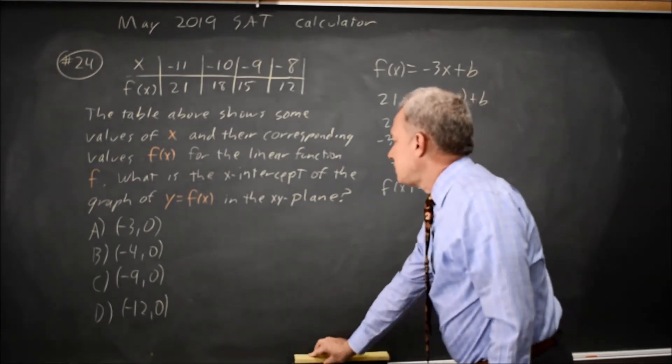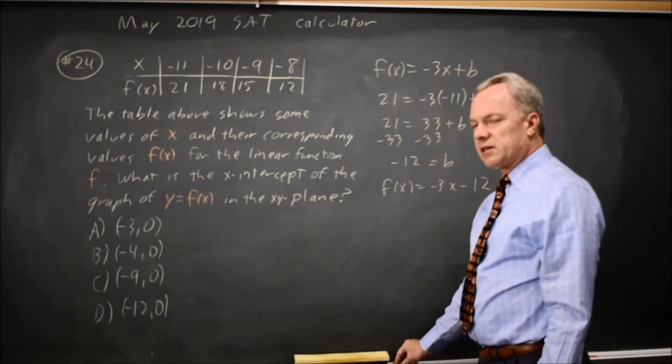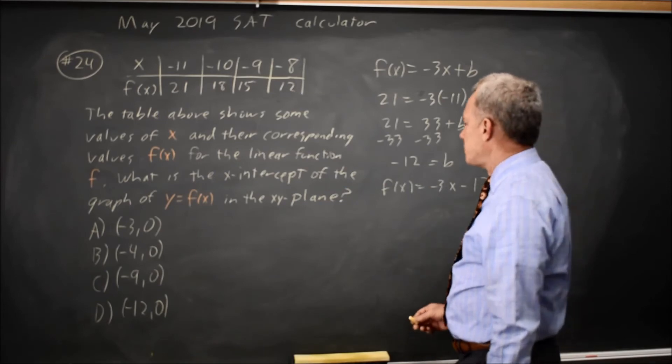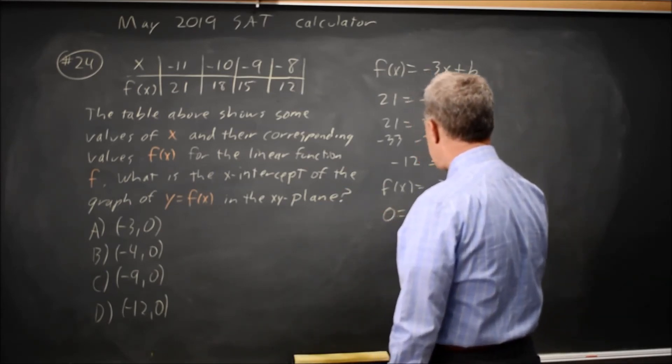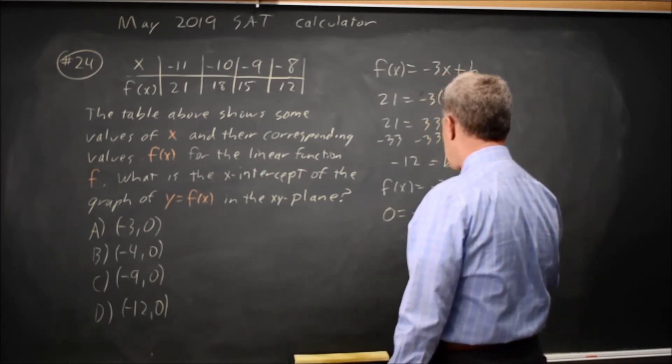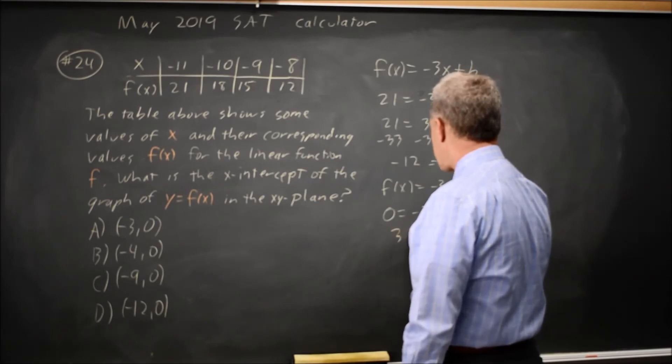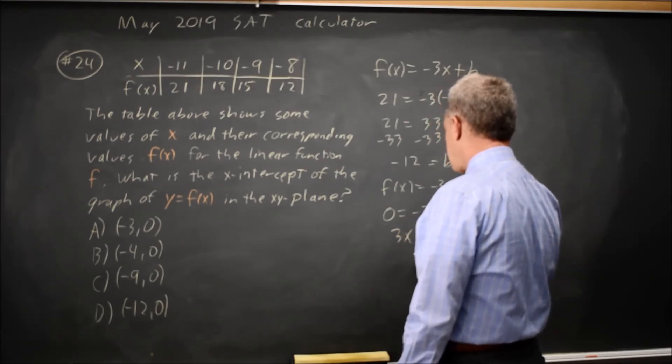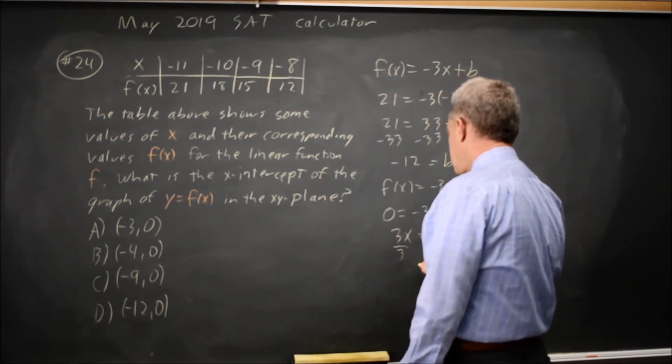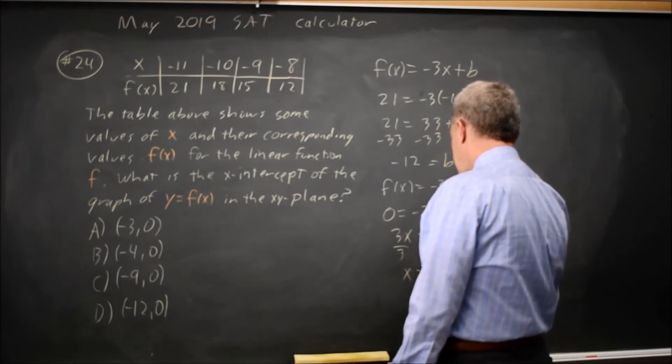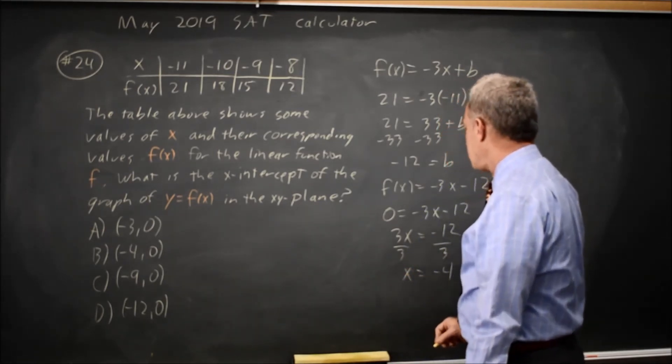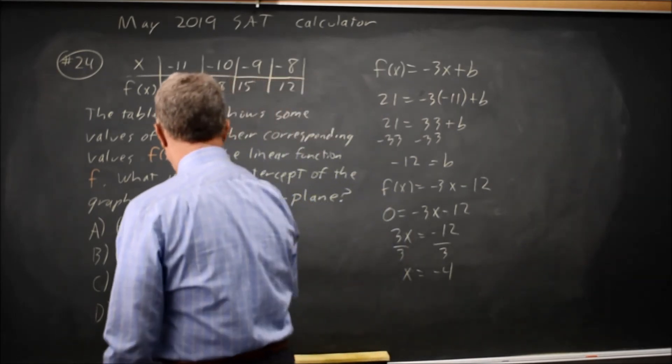Let's find the x-intercept. The x-intercept is the x value when y is 0. So 0 = -3x - 12, or 3x = -12. Divided by 3, x = -4 when y = 0. That would be choice B.